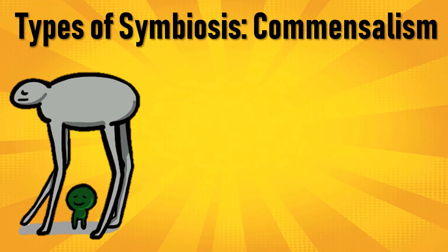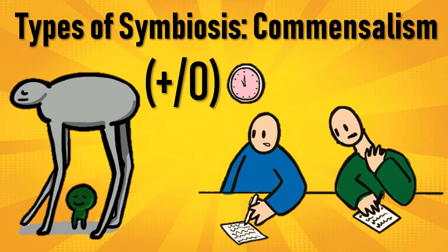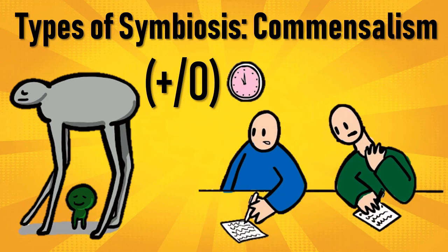Commensalism is a type of symbiotic relationship wherein one species benefits whereas the other remains unaffected. It's like your friend peeping into your answers, which won't affect your performance in exams but will definitely benefit your friend.